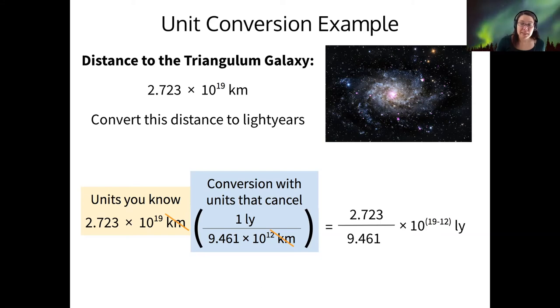So another example, this is in the numerator here, 2.723. So I'm going to take 2.723 divided by the 9.461. And then when I combine my exponents, it's going to be 19 minus 12 since the 12 here is in the denominator. And if I do this calculation, I get 0.288 times 10 to the 7 light years. But notice that my coefficient here is still not between 1 and 10. So if I bump this decimal over 1 to the right, then I need to take 1 away from my exponent. And so I end up with 2.88 times 10 to the 6 light years.